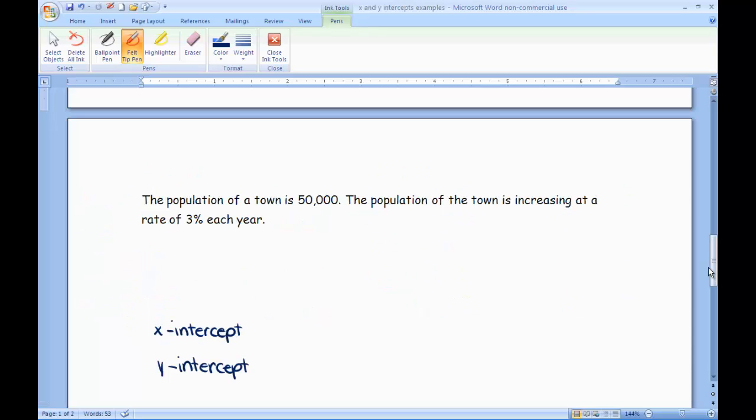For the last part, let's look at word descriptions. The population of a town is 50,000. The population of the town is increasing at a rate of 3% each year. When you're looking at word descriptions, the first thing you want to try and decide is what are the x values and what are the y values. What's the input and the output? So for this example, the input is going to be a year. The increase of the population is going by years. So my x values are going to be years, and then the y values are going to be the actual population.